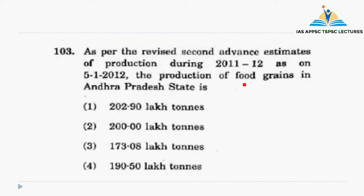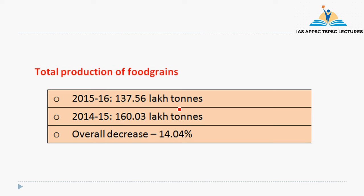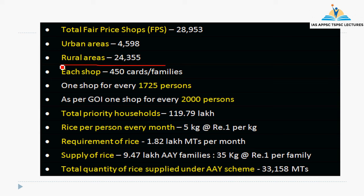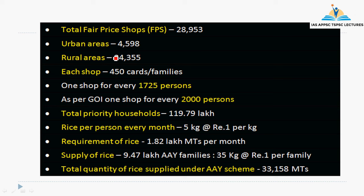The next question is the production of food grains. We have to study the table format. The next question is the total fair price shops. This is why we have a family's category and data in this type. We have to simplify the table. This is why we have total fair price shops and white ration cards. This is a factual question.